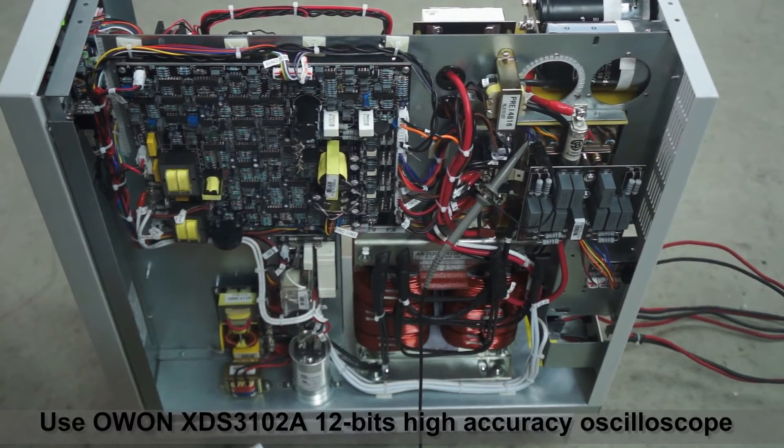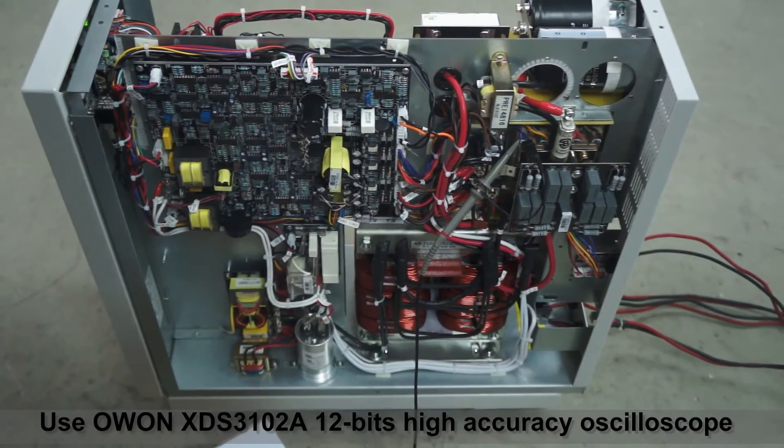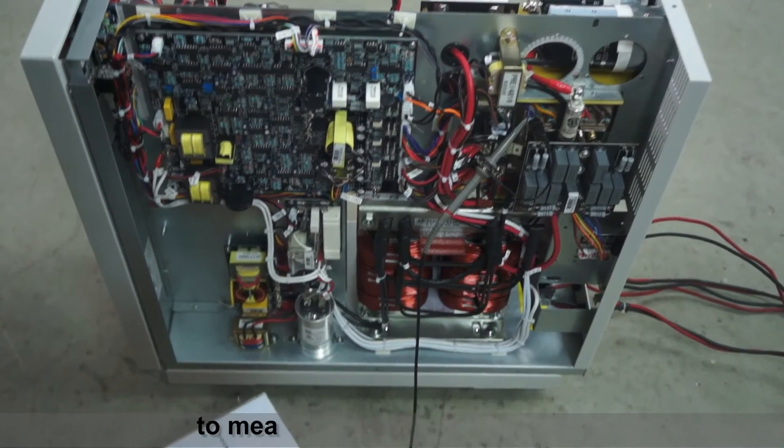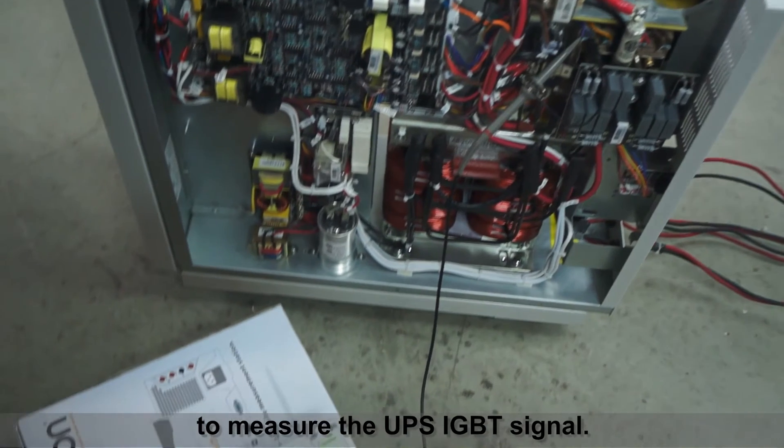Use OWON XDS3102A 12-bit high-accuracy oscilloscope to measure the UPS IGBT signal.